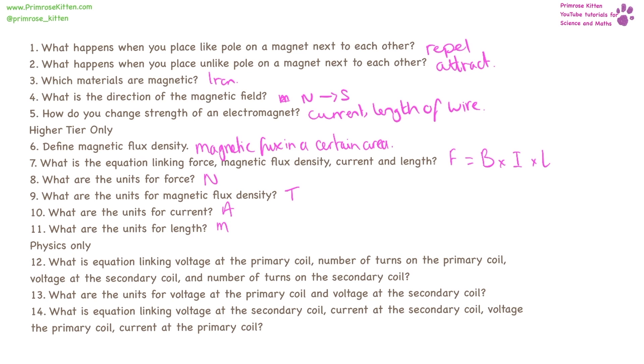The equation linking voltage at the primary coil, number of turns at the primary coil, voltage at the secondary coil, and number of turns at the secondary coil is: Vp/Vs = Np/Ns. That is, voltage at the primary coil divided by voltage at the secondary coil equals number of turns at the primary coil divided by number of turns at the secondary coil. The units for voltage are volts.